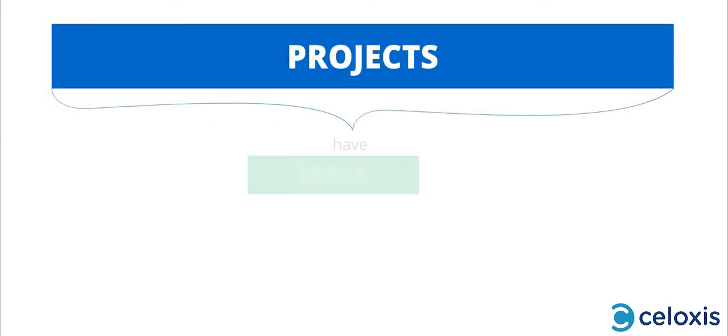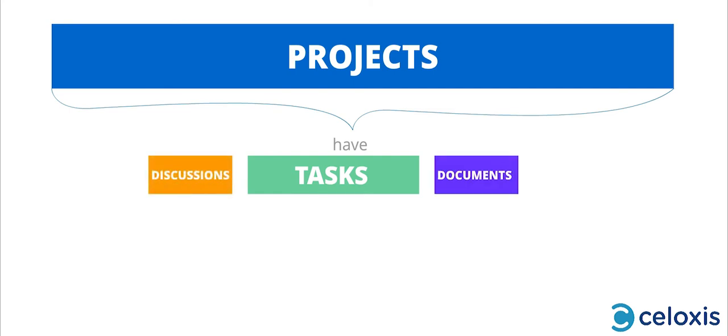Let's get started with understanding how everything is organized. At the top level, you have projects. Projects can have tasks, discussions, documents, and even bugs, risks, or to-dos.